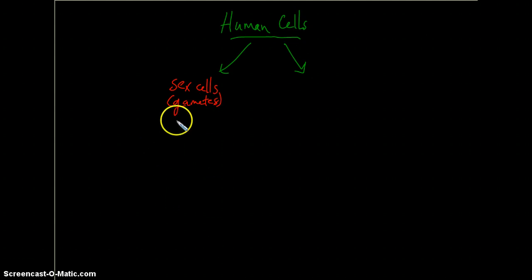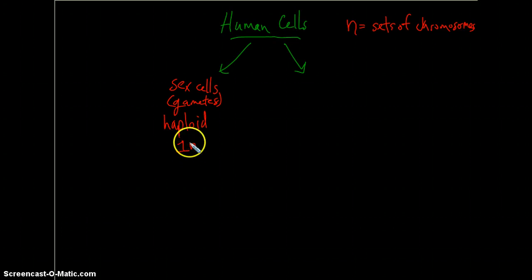The gametes are haploid. Haplo means half, so they have half the normal complement of chromosomes. They only have one set of chromosomes. When we talk about sets of chromosomes, that's represented with the letter N. So when we say haploid cells have one set of chromosomes, we represent that with 1N, or more commonly just N. These cells are made in the gonads, the ovaries in females or testes in males.